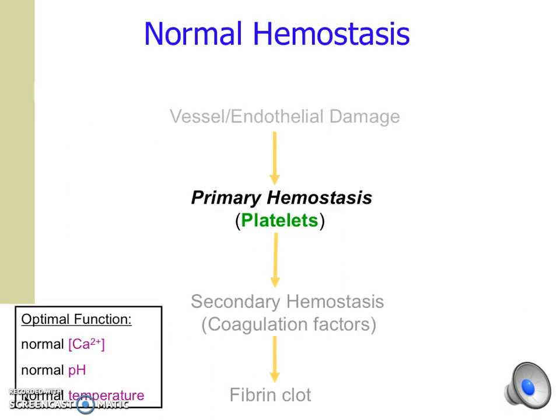Before we move on to primary hemostasis, it is important to realize that normal hemostasis as a whole requires three conditions for optimal function: normal blood temperature, pH, and calcium concentration.